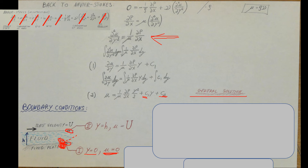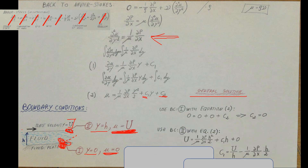The second boundary condition is at the top plate. They told us it moves with velocity capital U. So at y equals H, the fluid velocity equals capital U. By the no-slip condition, the very last molecule of fluid is stuck to the moving plate and moves with it at the same velocity. If the top plate were stationary, U would be zero again — but since it's moving, U equals capital U.